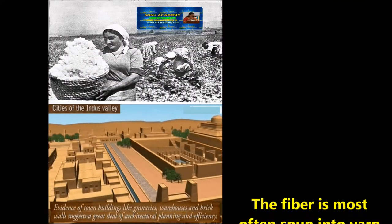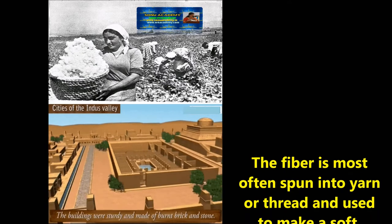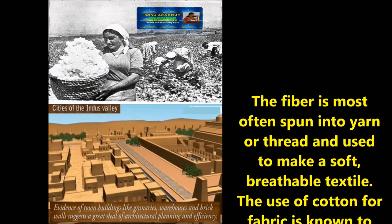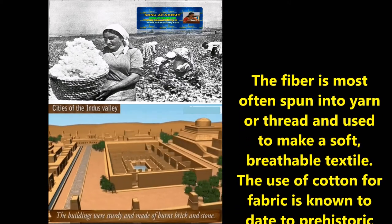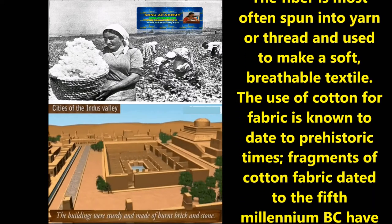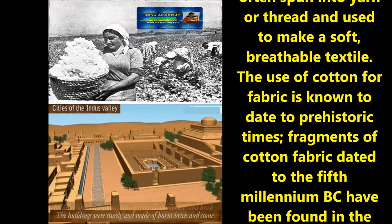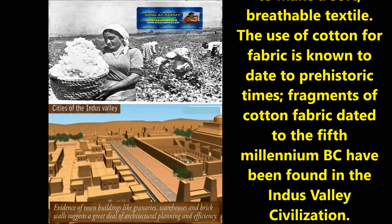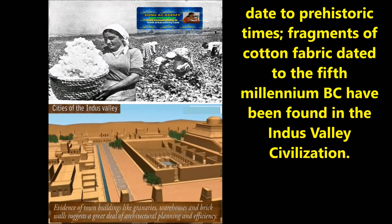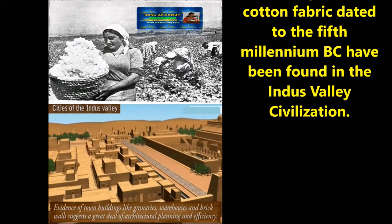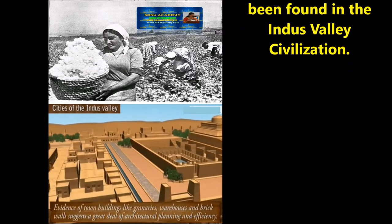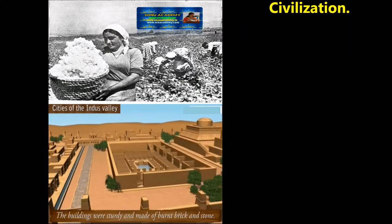Cotton fiber is most often spun into yarn or thread and used to make a soft breathable textile. The use of cotton for fabric is known from very historic times. Fragments of cotton fabric dated to the fifth millennium BC have been found in the Indus Valley Civilization.